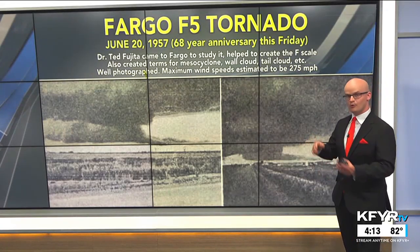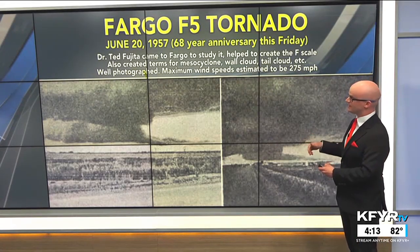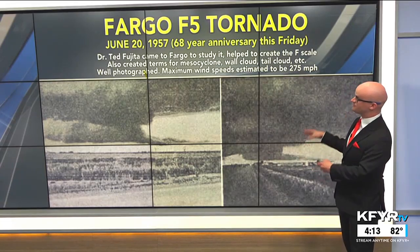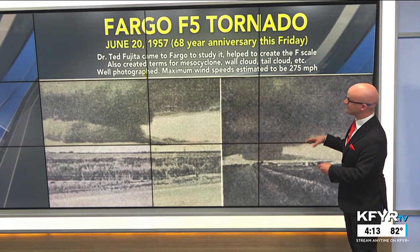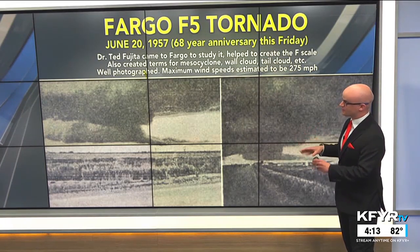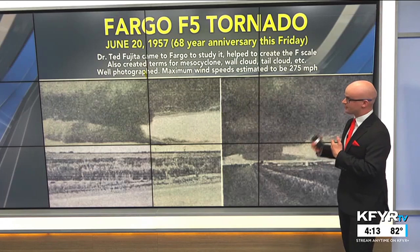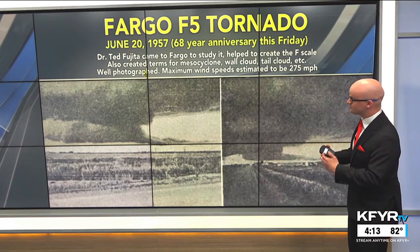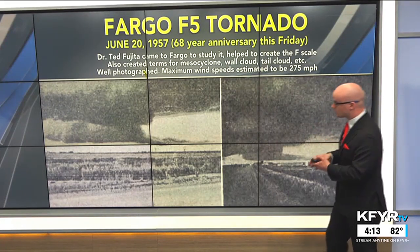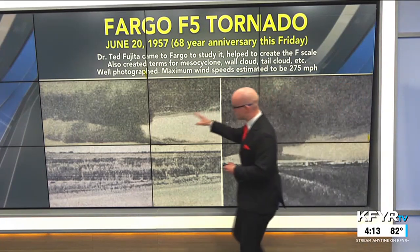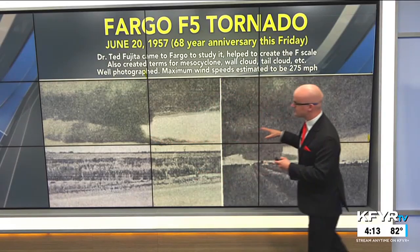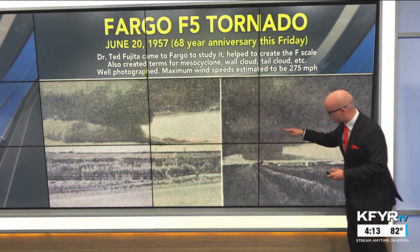The scale didn't exist yet because it was created in part thanks to the Fargo F5 tornado on June 20th, 1957 — the 68th anniversary falls this Friday. Dr. Ted Fujita came to Fargo to study it and helped create the F-scale.